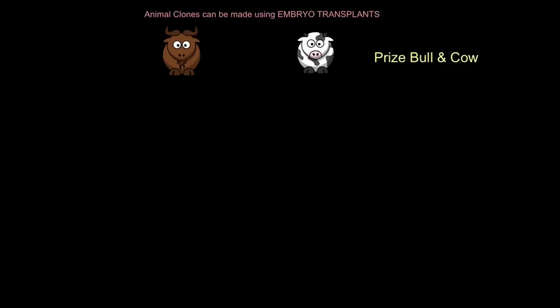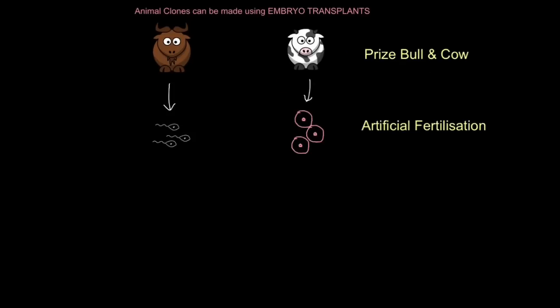But cloning plants is fairly simple. What if we want to clone something more complex, like a mammal? Animal clones can be made using embryo transplants. The first step is to select your animals with desirable features, a male and a female version. So take your prize bull and prize cow. You collect a sample of their sperm and eggs, and you allow them to fertilize artificially. This will create a fertilized egg cell, which will then divide rapidly to form an embryo.